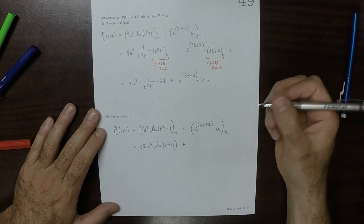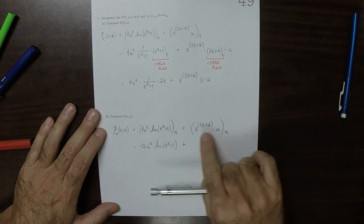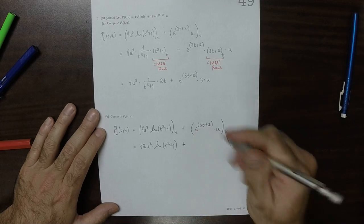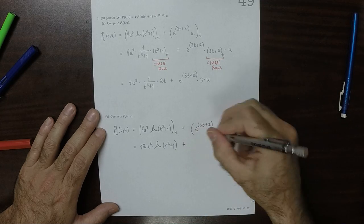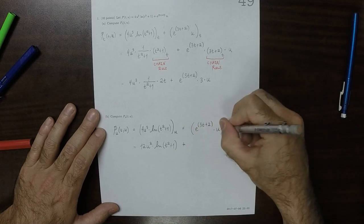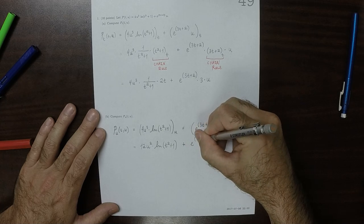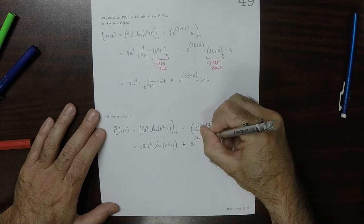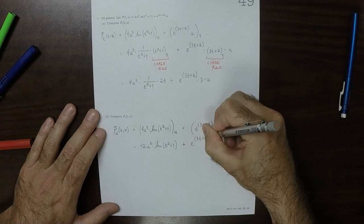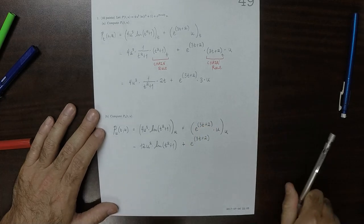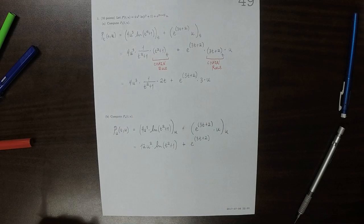And then plus — the exponential thing is a constant, so this is a constant times u — so that's exponential 3t plus 2.